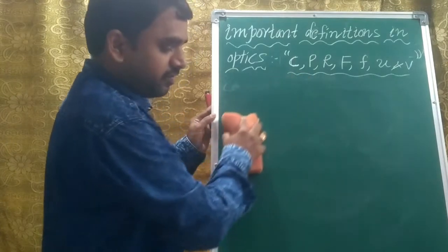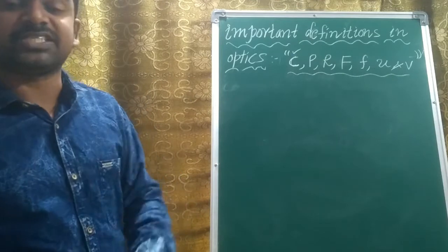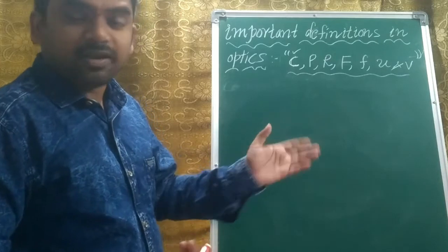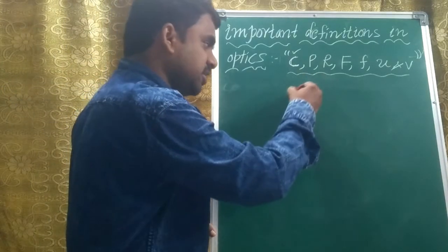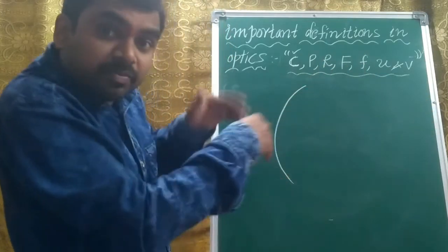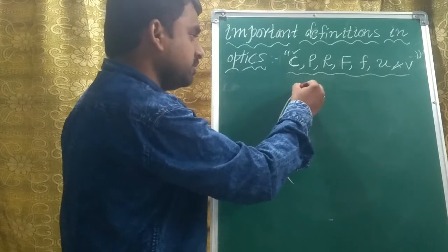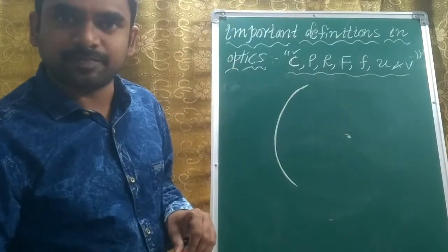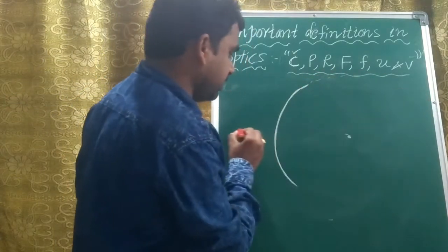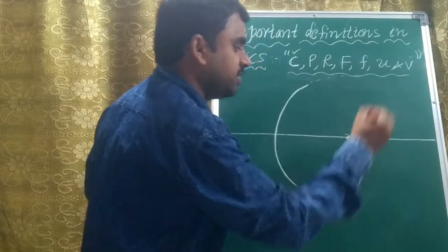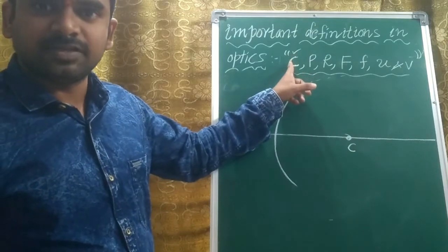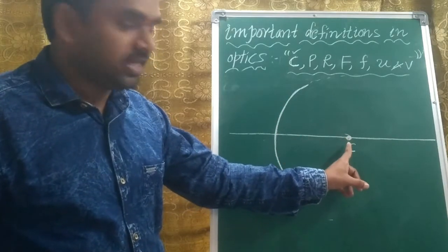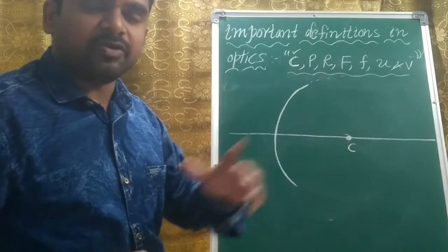After that, we have to discuss the center of curvature. What does C stand for? C stands for center of curvature. How do we obtain a spherical mirror? From a total sphere, we take a small part. The center of that original sphere from which we took the curved part is called the center of curvature, denoted by the letter C.